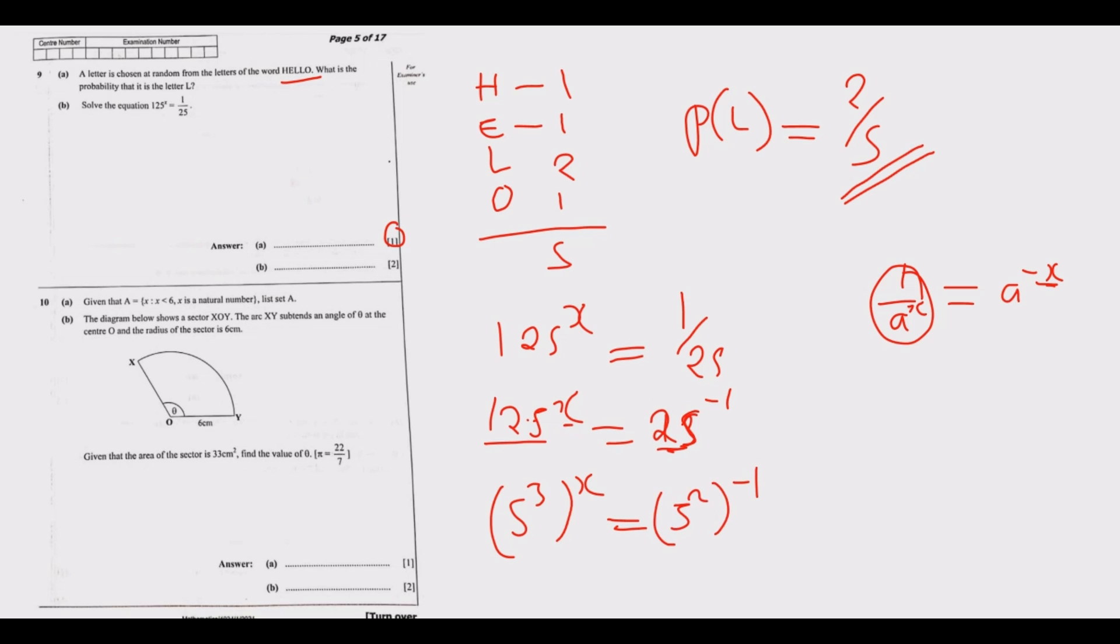Then these powers can be multiplied, so 3 times x is 3x. We have 5 to the power 3x is equal to 5 to the power negative 2. If you notice, the base here is 5, so if this is 5 and these are equal, it means the powers should be the same. So 3x is equal to negative 2. Then we divide by 3, so we end up with x is equal to negative 2 over 3.